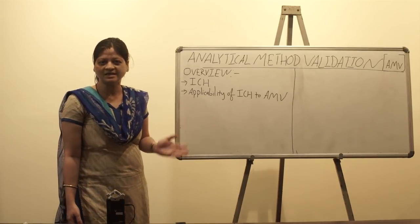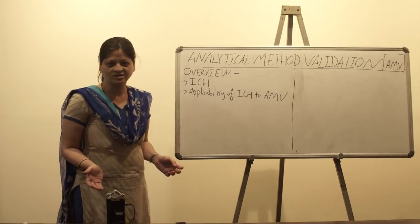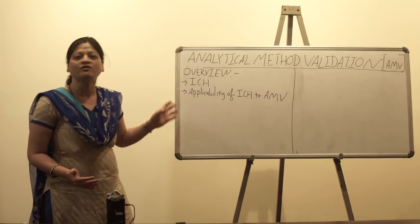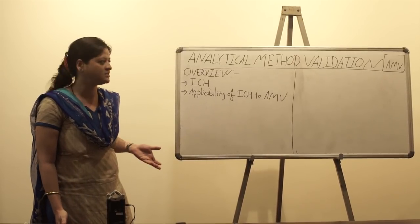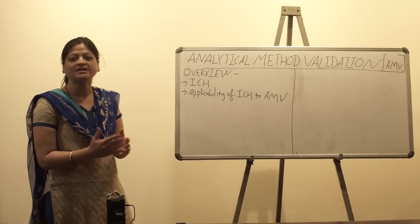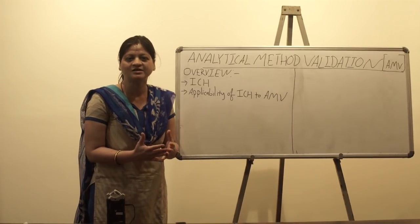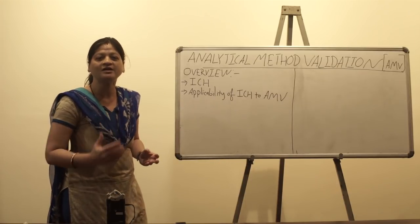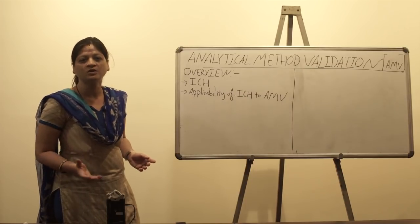To give you an overview of ICH: ICH stands for International Council for Harmonization. Earlier, the same guidelines were known as International Conference on Harmonization, but in the year 2015, the nomenclature was changed. ICH is a global harmonization where three to four countries or regions have come together and harmonized different guidelines applicable to pharmaceuticals and their registration for human use.